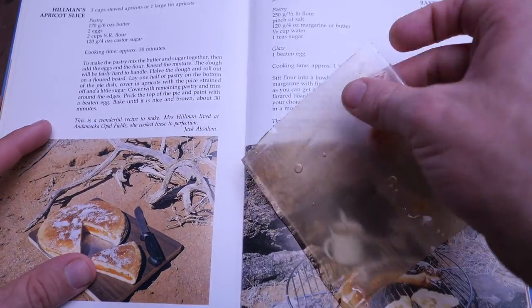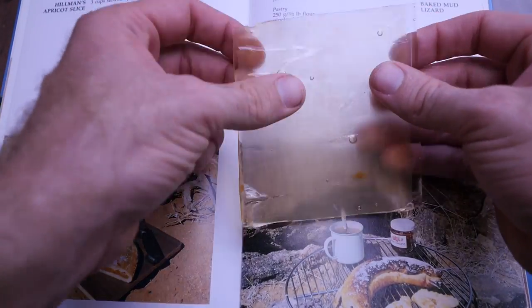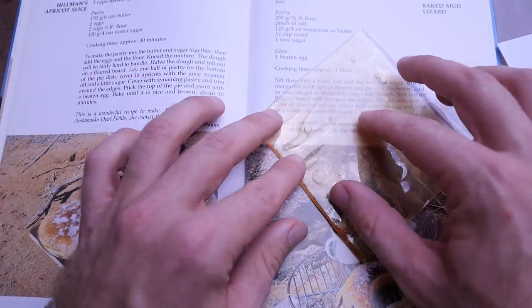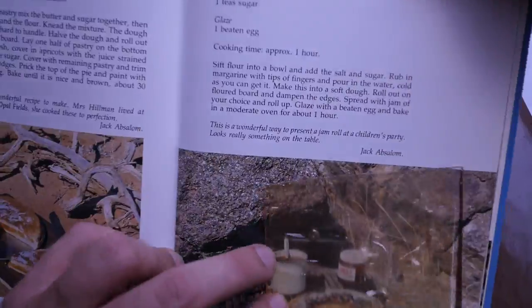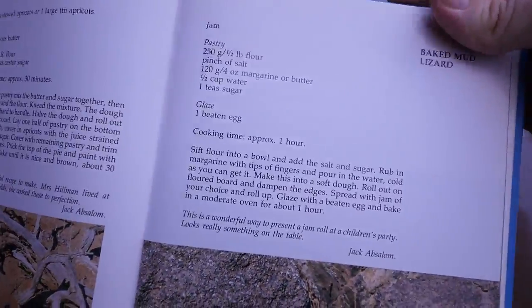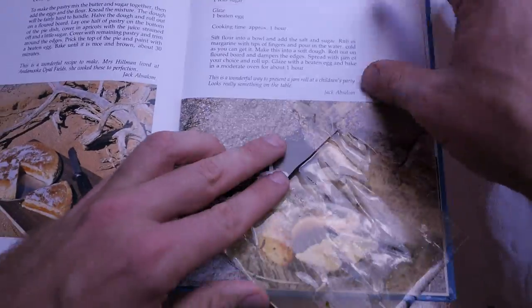So some examples you can see just how incredibly clear we can make it, especially with these thin veneers. This wood, this is an Australian recipe for making a baked mud lizard out in the Outback.